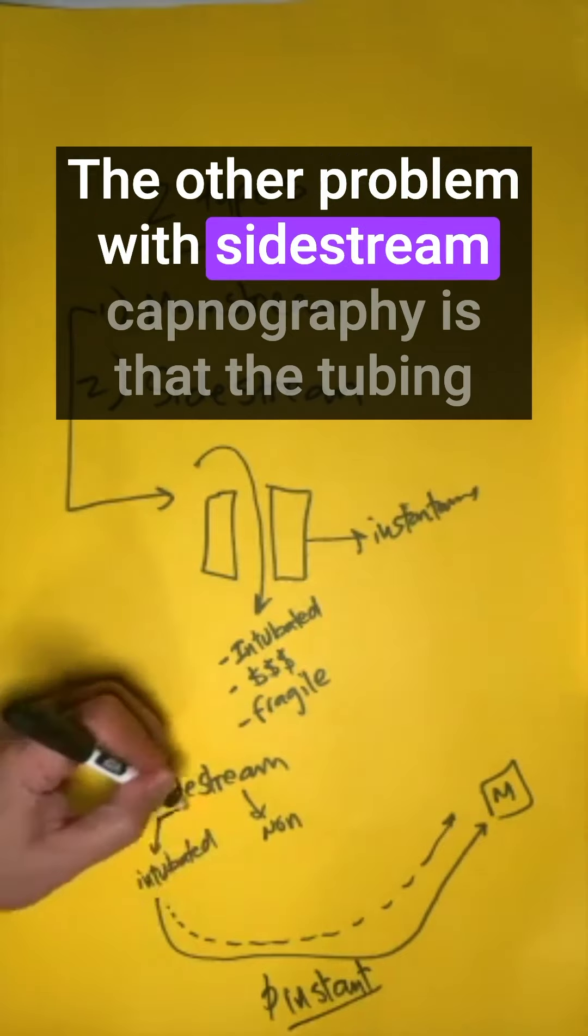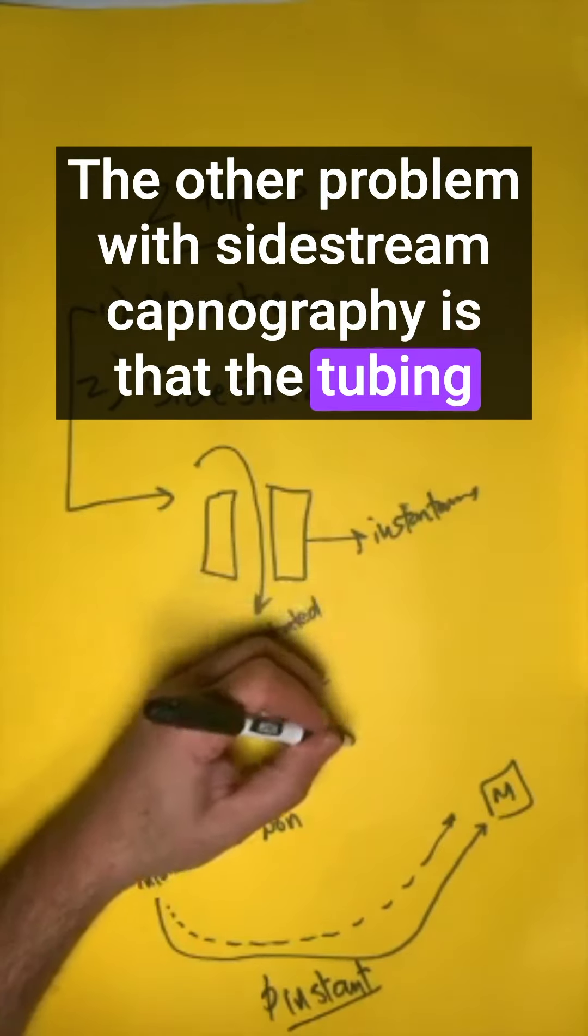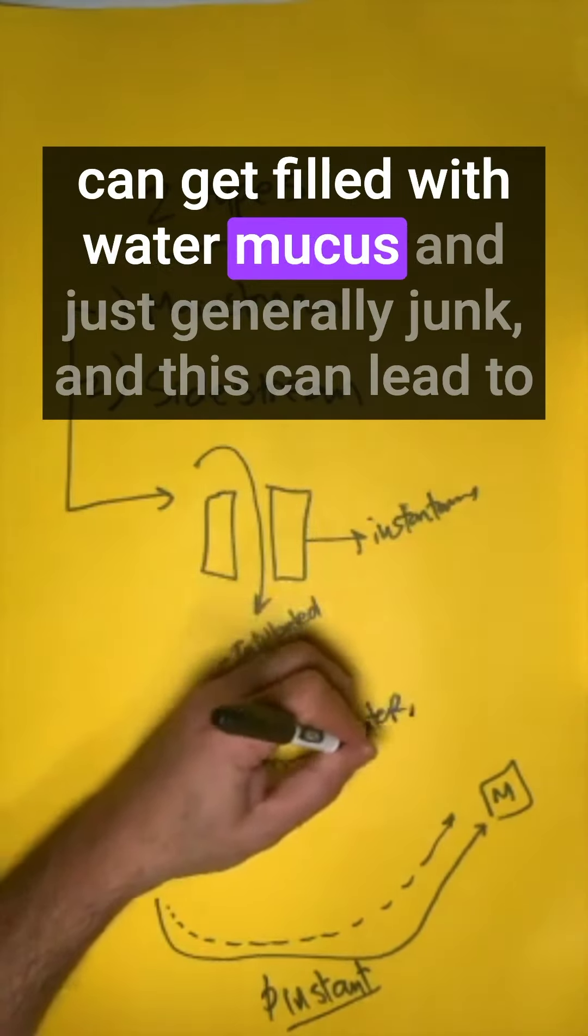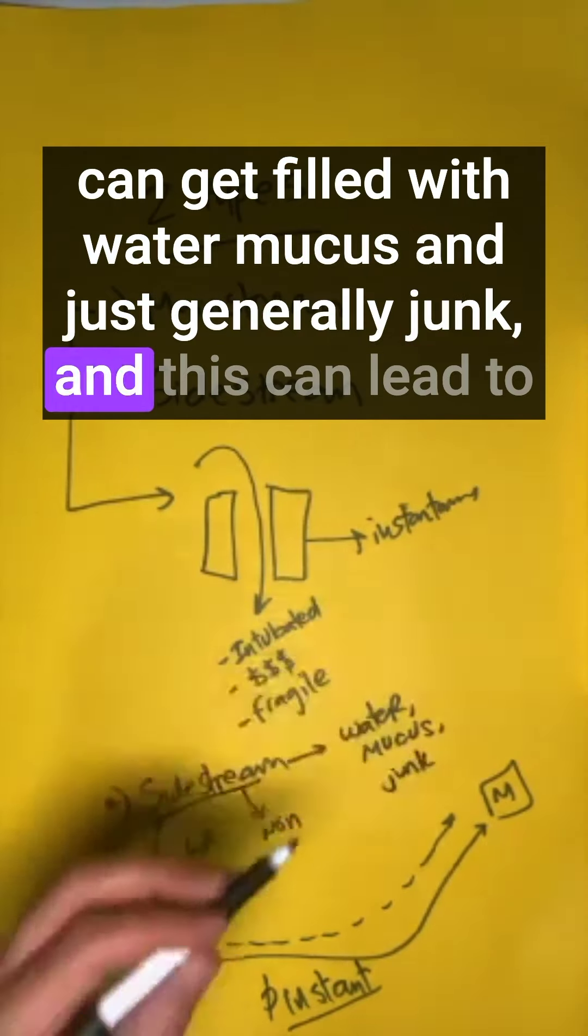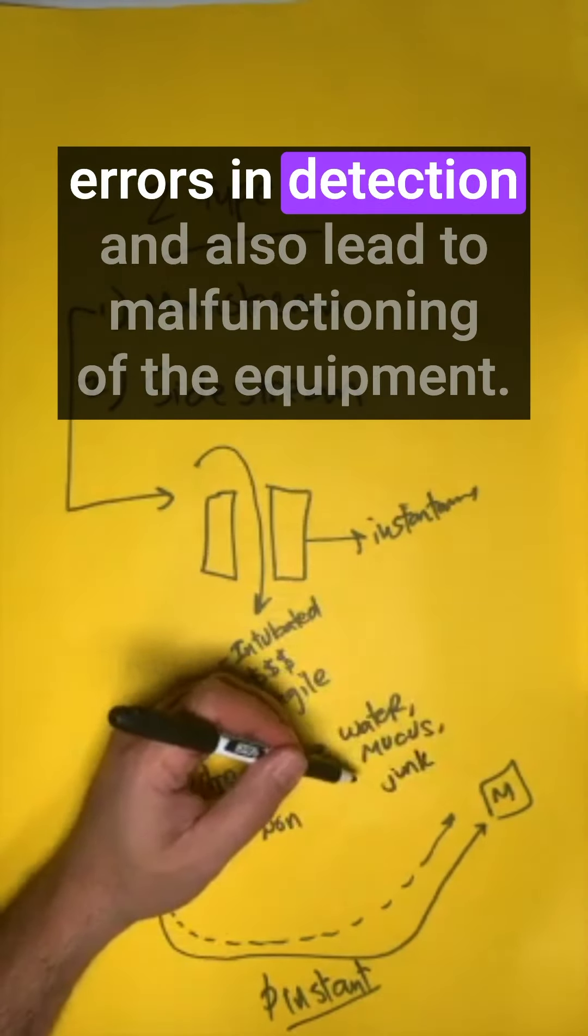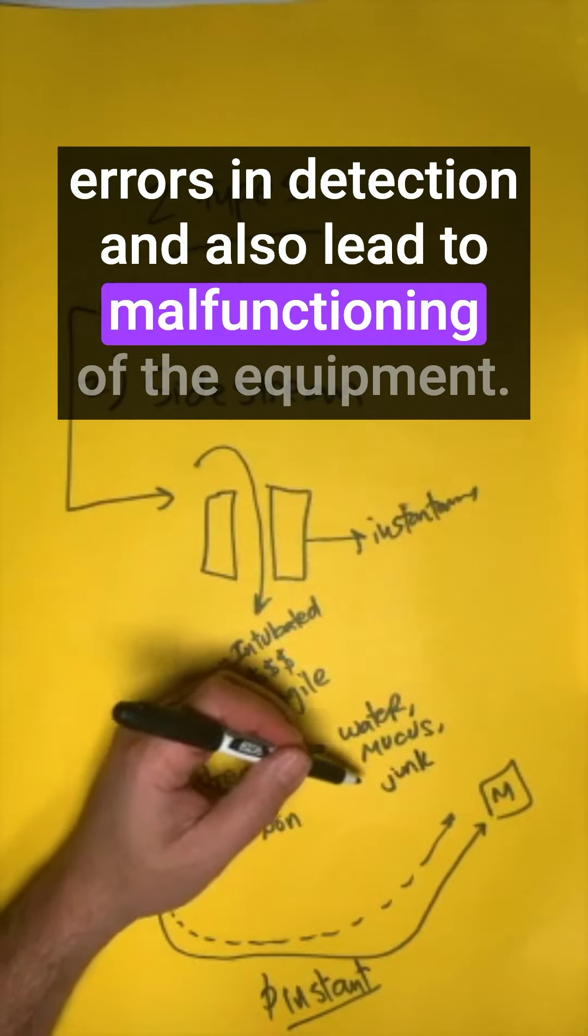The other problem with sidestream capnography is that the tubing can get filled with water, mucus, and just generally junk. This can lead to errors in detection and malfunctioning of the equipment.